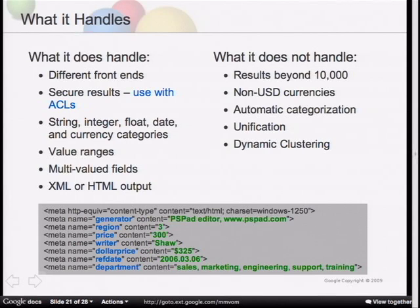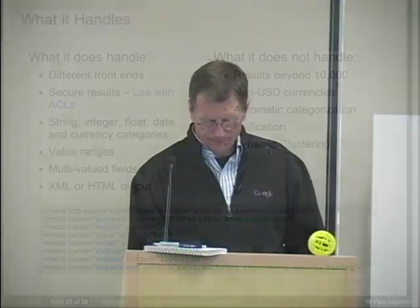We don't do automatic categorization of your metadata — you need to have good, clean metadata for this to work well. We don't build up the category list on the left-hand side automatically; you have to go in as administrator and manually set that up. Dynamic navigation also doesn't work if you have unification turned on — that's where multiple GSAs from different regions or departments are combined, with one GSA making search requests to another.